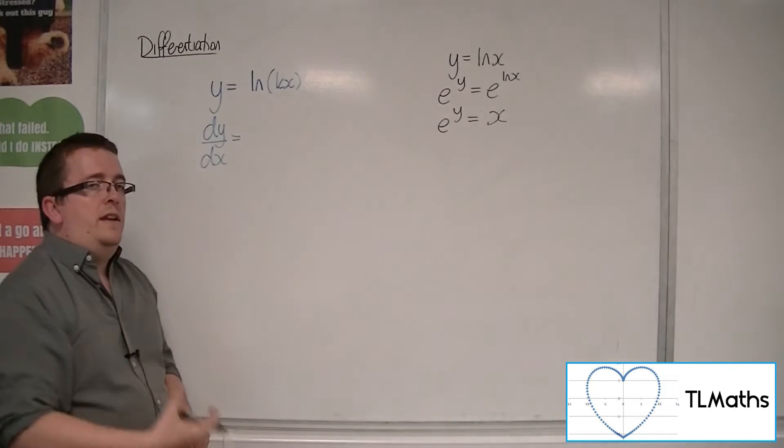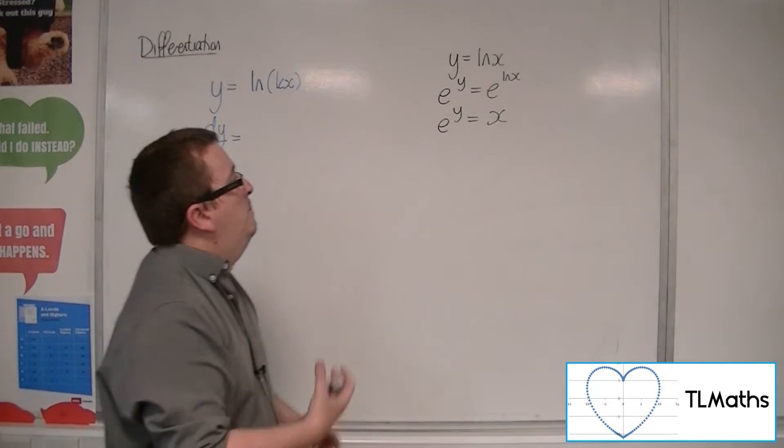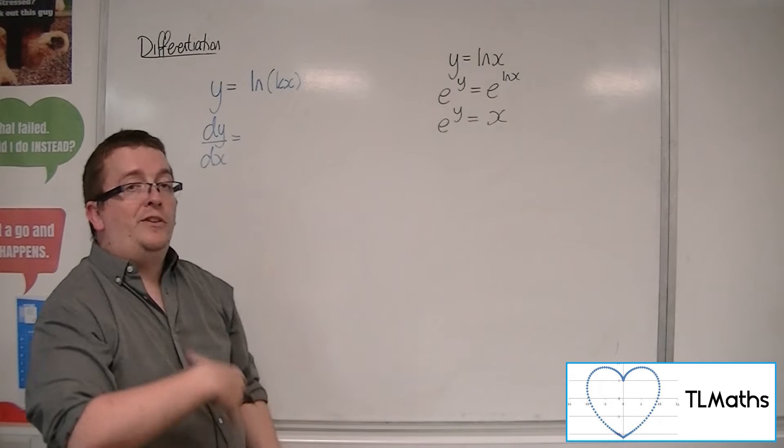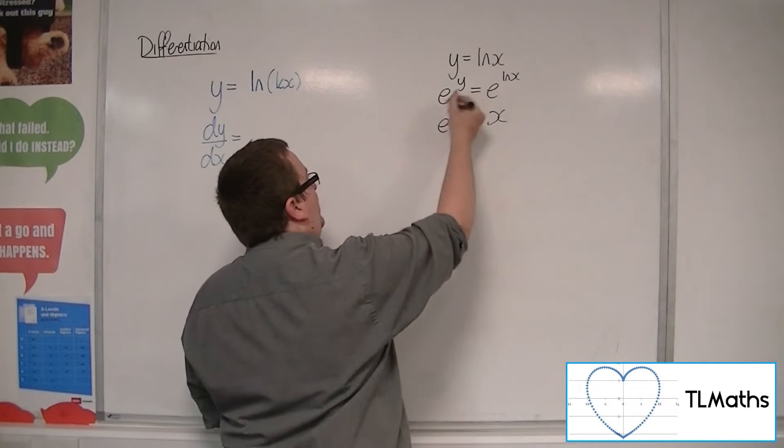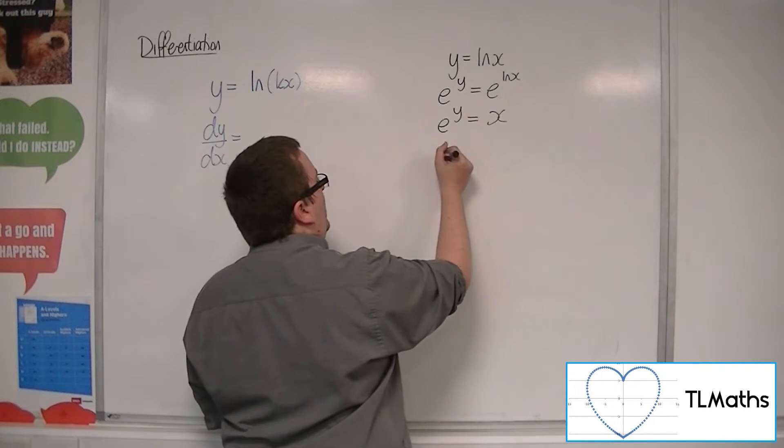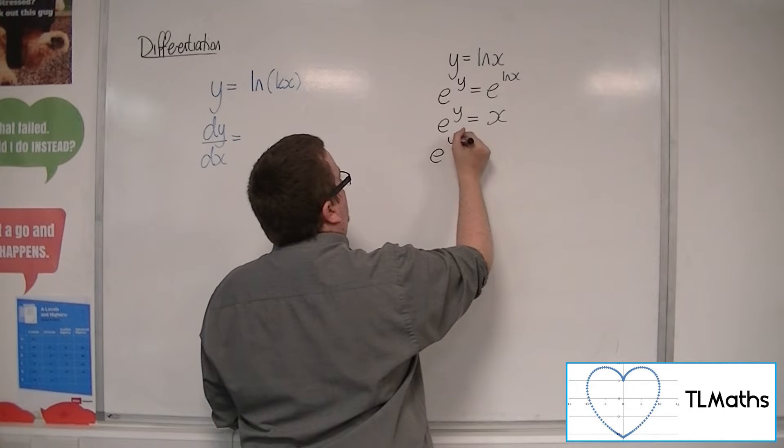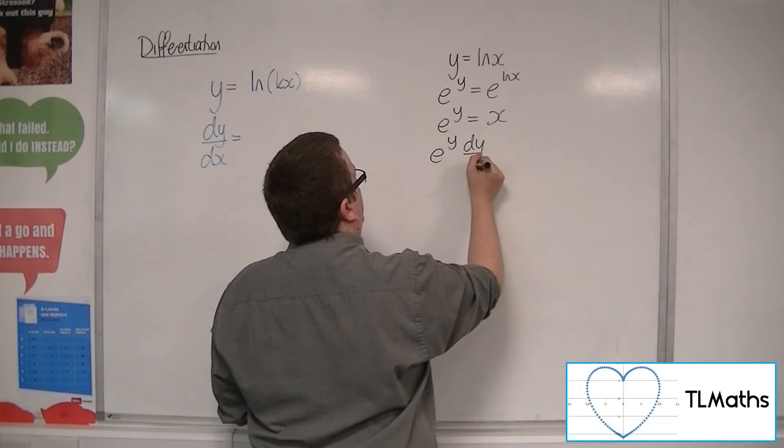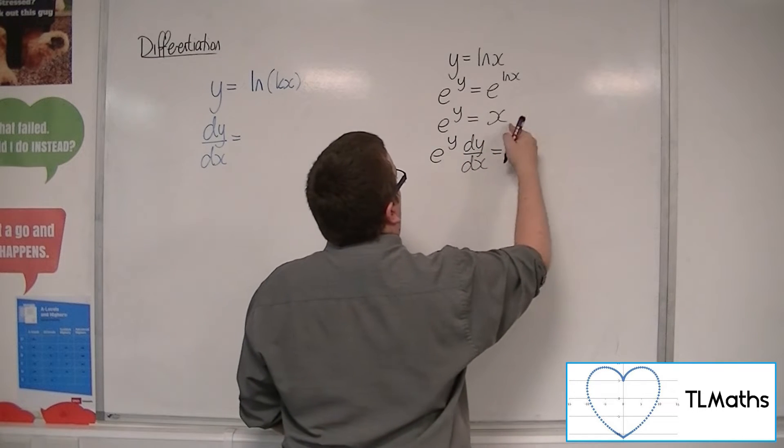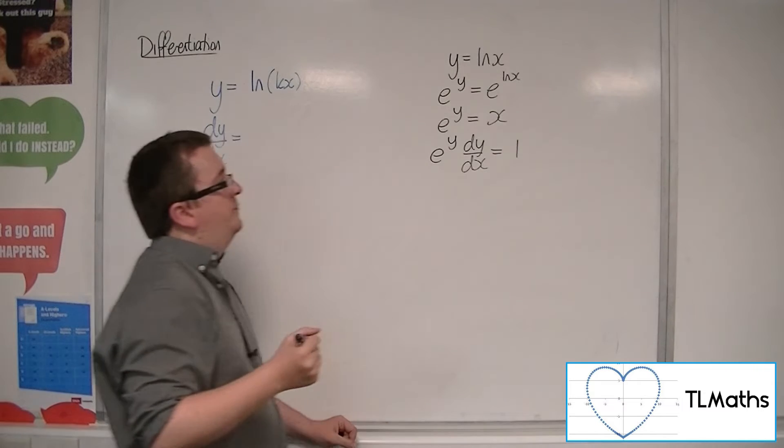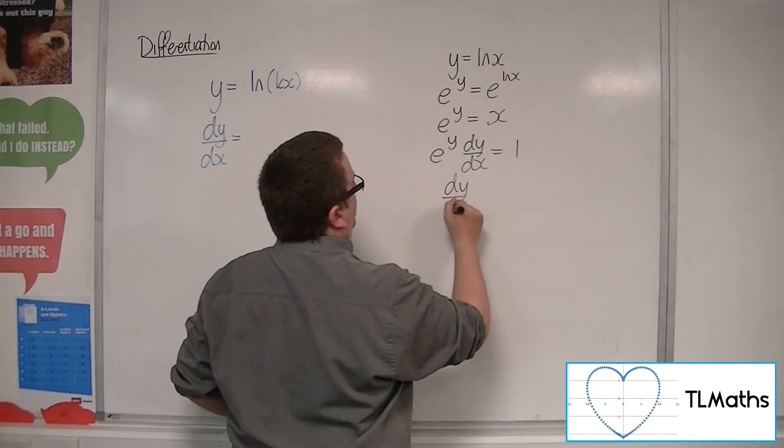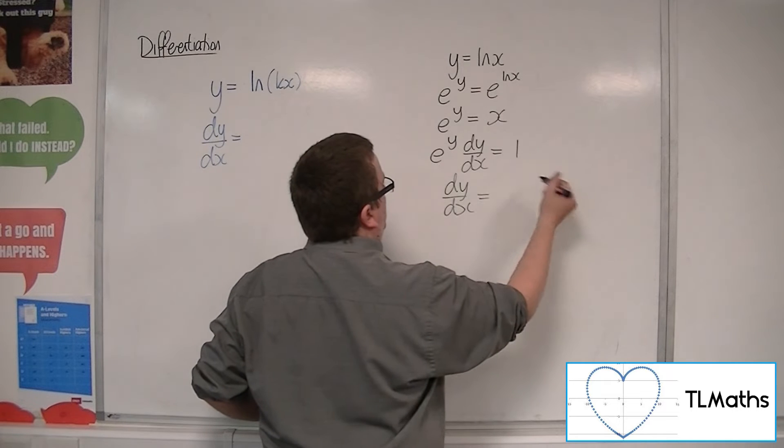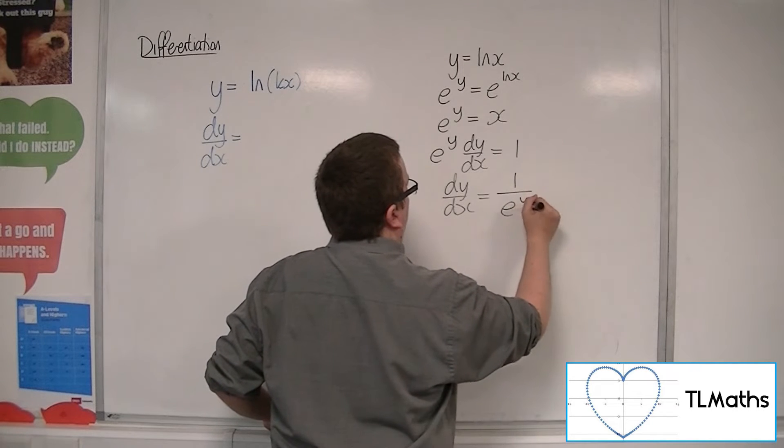You can then differentiate both sides of this equation, the left-hand side using implicit differentiation. So implicitly differentiating e to the y with respect to x, I get e to the y dy by dx. And on the right-hand side, I get 1. So we can then divide both sides by the e to the y.